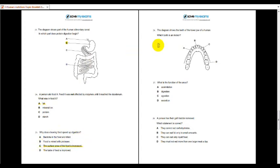Number 26, which tooth is incisor? D. Everyone, make sure you got that answer correct. What is the function of the anus? Egestion. A person had their gallbladder removed. Which statement is correct? They can only eat fat in small amount. Because why? If there is no gallbladder, meaning that there would be no storage of bile. So fat digestion will be affected.